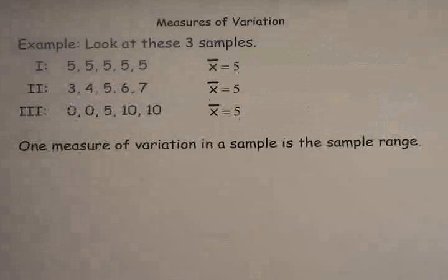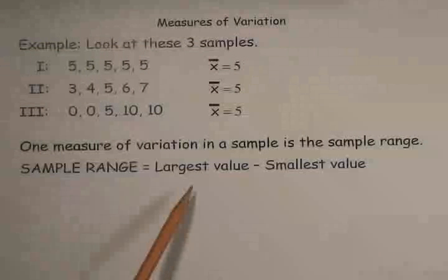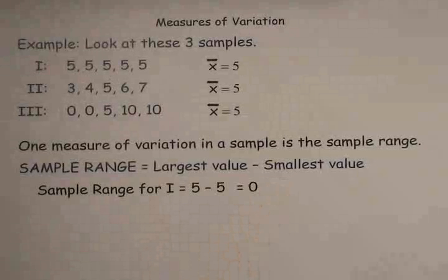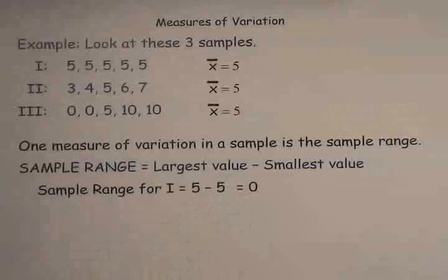Getting back to my measure of variation, one common measure of variation in a sample is called the sample range. The sample range is nothing more than the largest value in the set of numbers minus the smallest value. For example, going back to data set one, the sample range is five minus five — the largest and smallest value is five — so the sample range is zero, indicating no spread or variation at all.